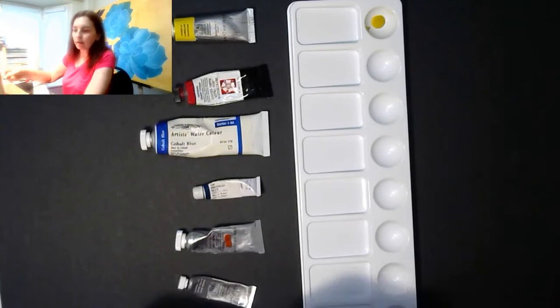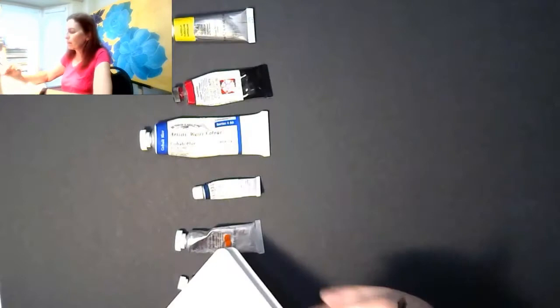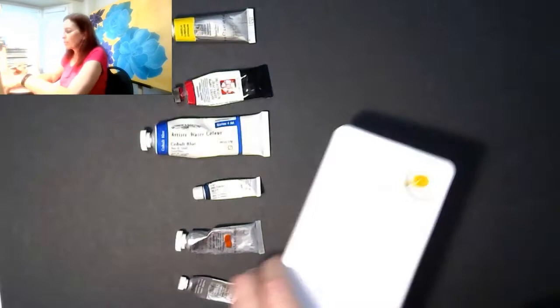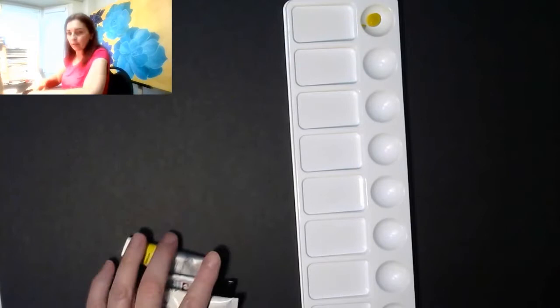But to remember what's in it, I take a sharpie and write on the side. So this one I'm going to write AW for aureolin yellow, because sometimes you forget which color you have where. So those are my tubes.